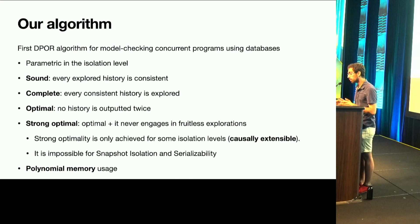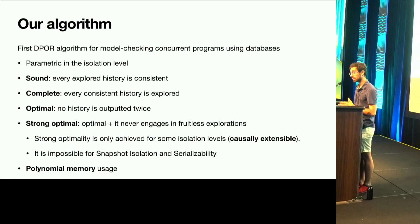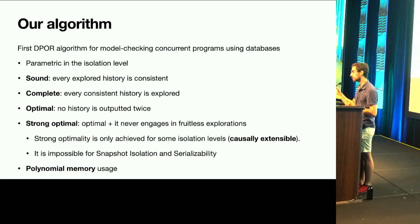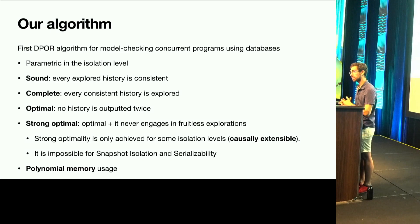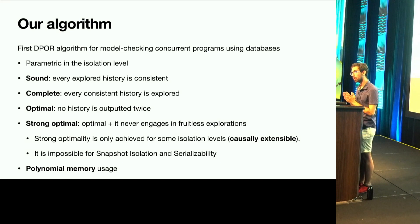We present a DPOR algorithm for model checking concurrent programs using databases. It is parametric in the isolation level, sound and complete — meaning every explored history is consistent and every consistent history is explored — and optimal, because no history is explored twice. We also wanted the algorithm to be strongly optimal, meaning it never engages in fruitless exploration — it does not explore a branch that is partially consistent but can never be extended to a consistent one. However, we only managed to achieve strong optimality for some isolation levels we call causally extensible, and it is impossible for snapshot isolation and serializability. To avoid hard-coding the hardness of the problem in memory, we use only polynomial memory.